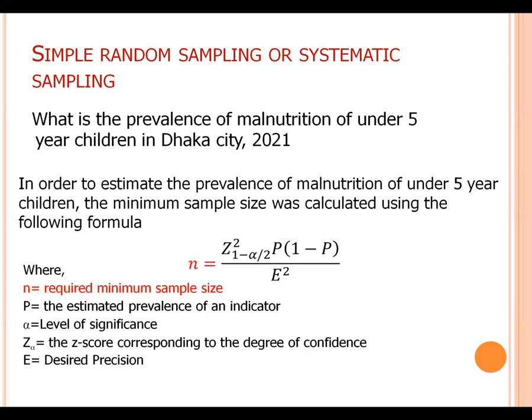Where n is required minimum sample size. P is the estimated prevalence of an indicator. Alpha is level of significance. Z alpha is the Z value corresponding to the degree of confidence. E is the desired precision.